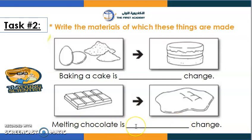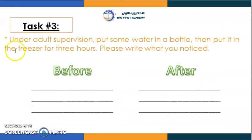Melting chocolate — what type of change is it? You're right, it's reversible, because when you melt it you can then freeze it back again.